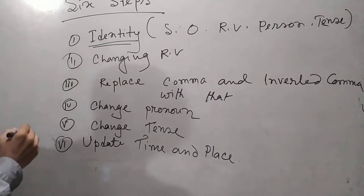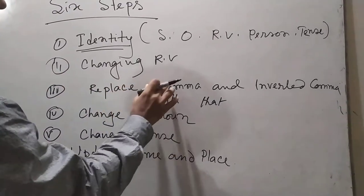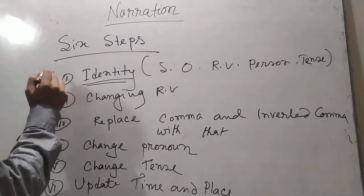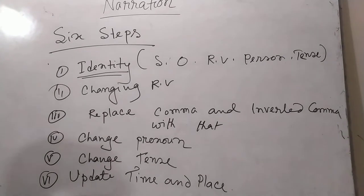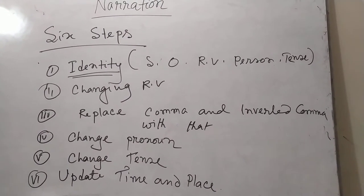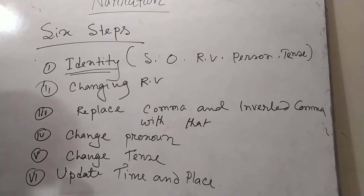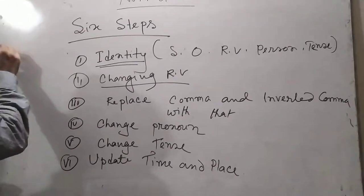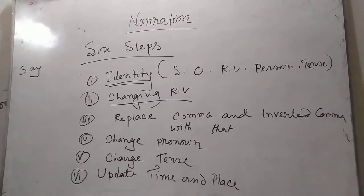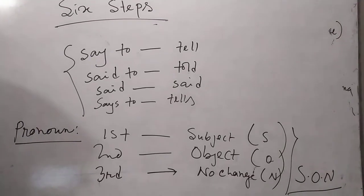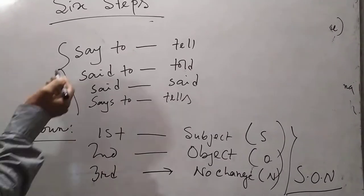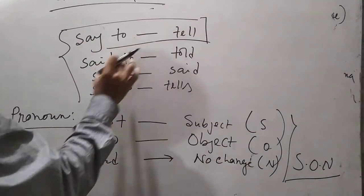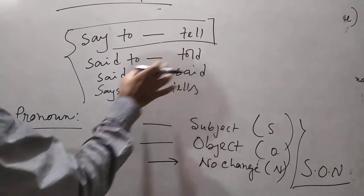Then you have to start changing: changing of verb, replacing comma and inverted comma with 'that', changing pronoun, changing tense, updating time and place. These six things should be done if you want to change direct speech of an assertive sentence into indirect one. Now, how will you change the reporting verb? Reporting verb can be changed in the following way: 'say to' will be changed into 'tell', 'said to' into 'told', 'said' into 'said', and 'says to' into 'tells'.